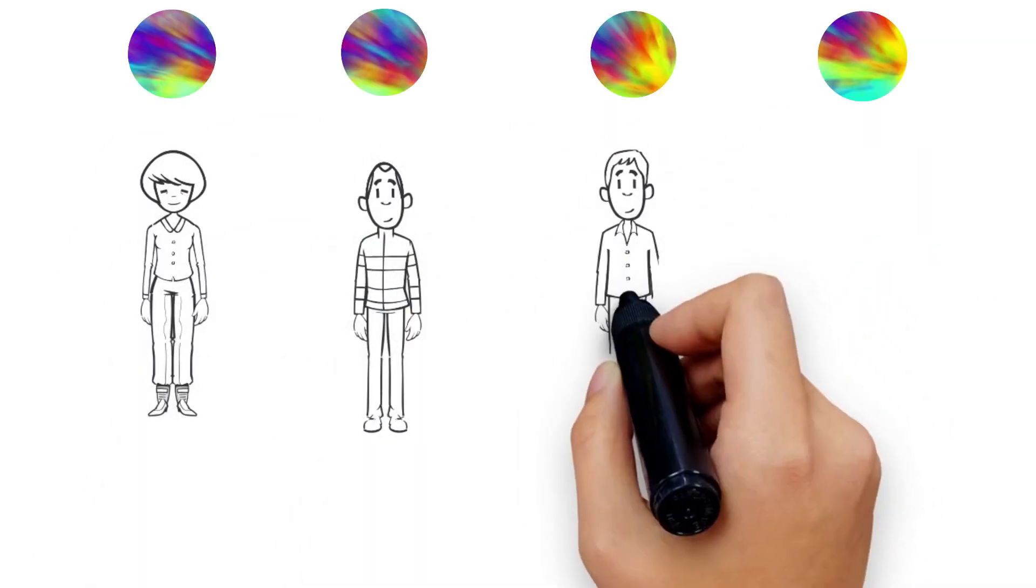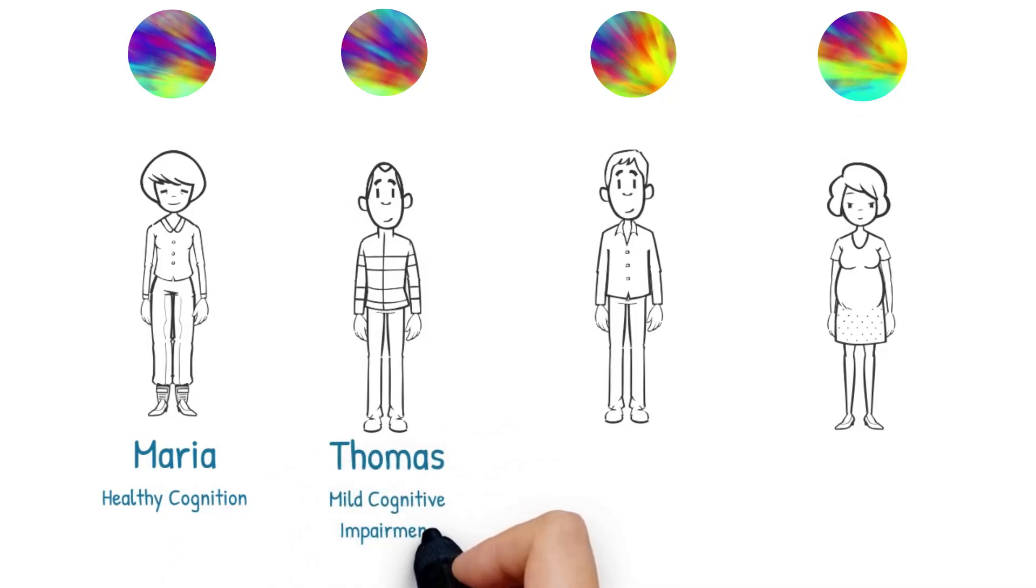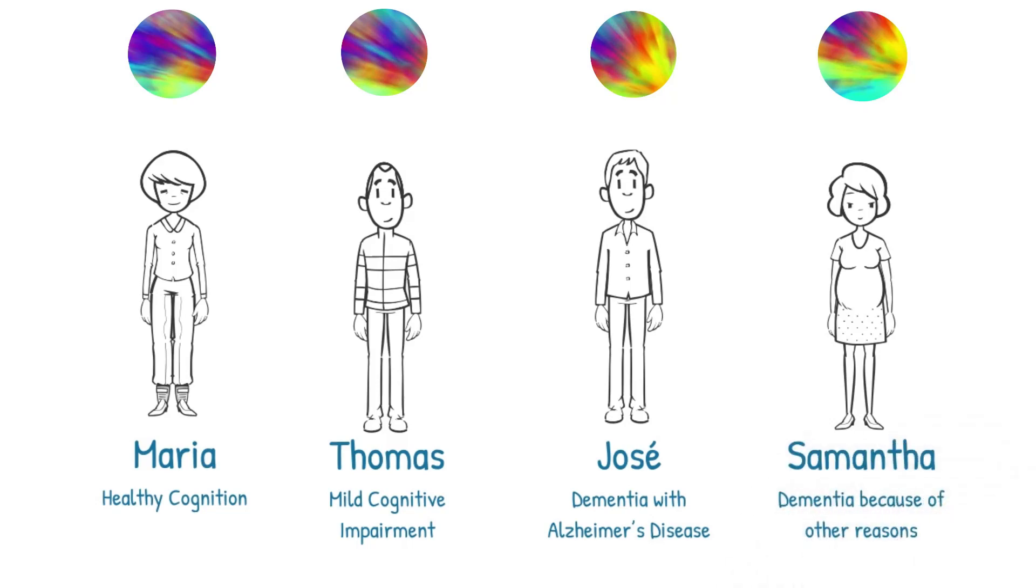Now suppose we have four individuals. Maria has healthy cognition, Thomas has mild cognitive impairment, Jose has dementia with Alzheimer's disease, and Samantha has dementia because of other reasons.